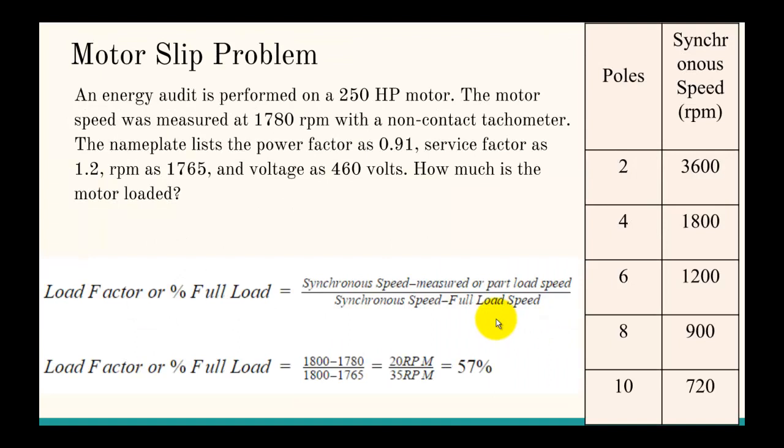Motor slip. Motor slip is a way to basically measure how much a motor is loaded, and usually you are using a tachometer which is measuring RPM. In this case an energy audit is performed on a 250 horsepower motor. The motor speed was measured at 1780 RPM with a non-contact tachometer. The nameplate lists the power factor as 0.91, service factor as 1.2, RPM as 1765, and voltage as 460 volts. How much is the motor loaded? It turns out there's actually a good bit of extra information here. You don't need the 250 horsepower, the power factor, the service factor, or the voltage. All you need is the RPM values here, the 1780 RPM and the 1765.